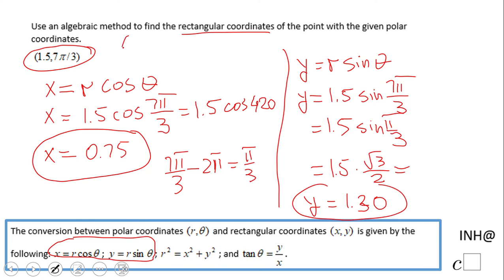So the rectangular form of this point will be (0.75, 1.3). Don't forget to click the like button and come back to C Squared for more help. Thank you!